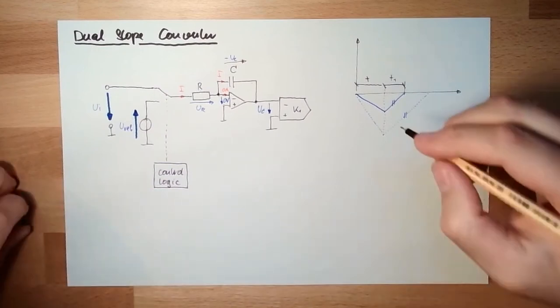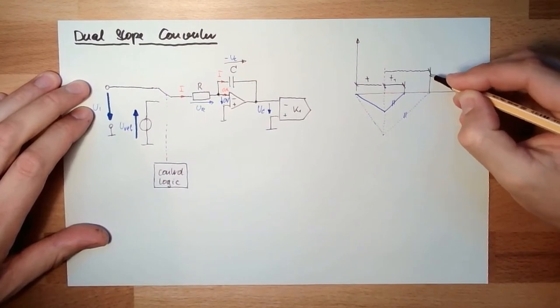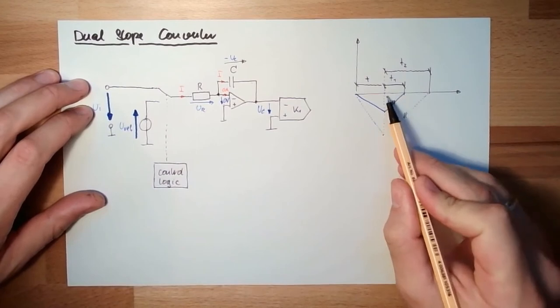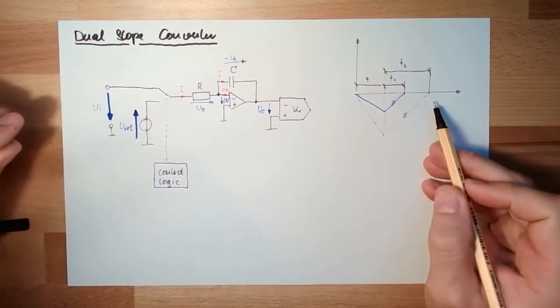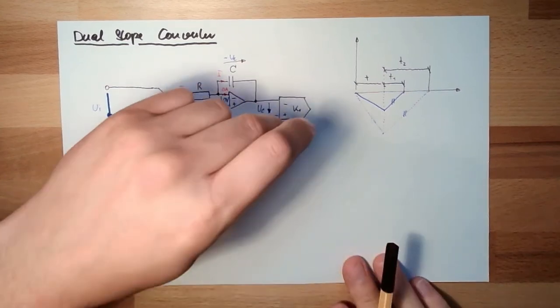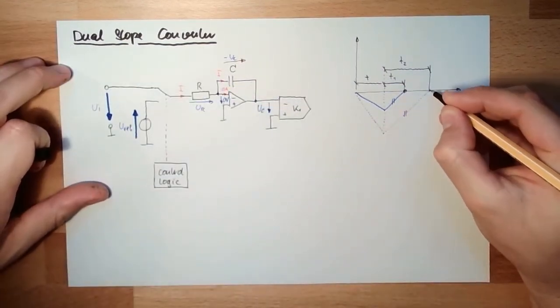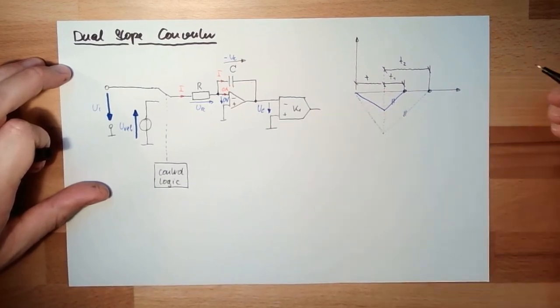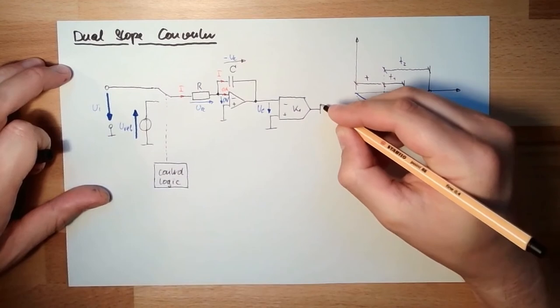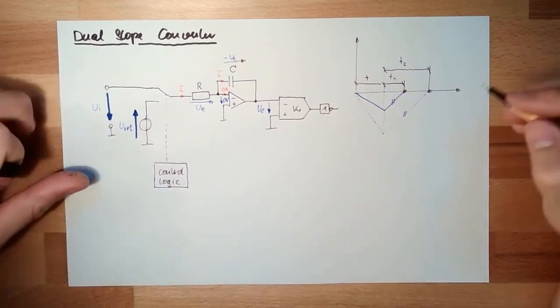This means I have a parallel unloading. These two lines are parallel. And I do measure a different time here. I do measure a different time, T2. This means the longer the time is, the bigger UI was. And here, this is this comparator. Here, if I am at zero again, there is an output. Then I have to stop the time, or I have to run the time if it's not zero.